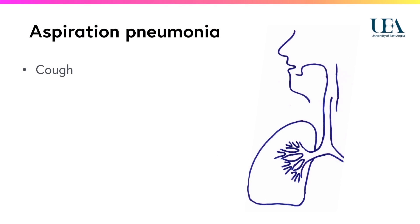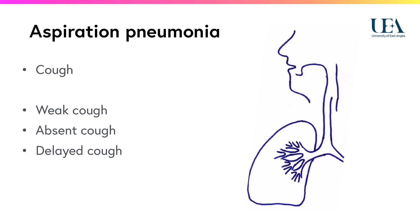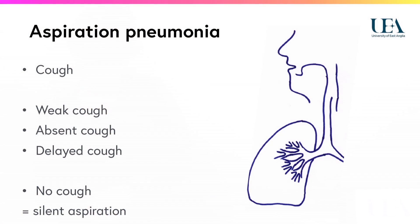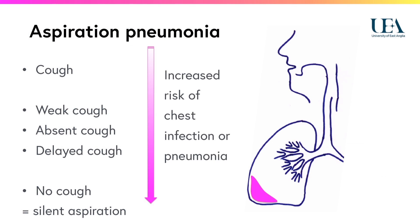The normal response to aspiration is a cough, as you will know if you have ever experienced food or drink going down the wrong way. Some developmental or acquired neurological conditions result in loss of sensation, which results in a weak or absent cough, or even a delayed cough. Patients with poor respiratory status may also have a weak cough. If there is no cough response, this is called silent aspiration. Failure of secondary protection, i.e. the cough, will result in a significant risk of chest infection or pneumonia.